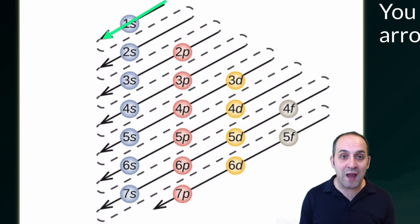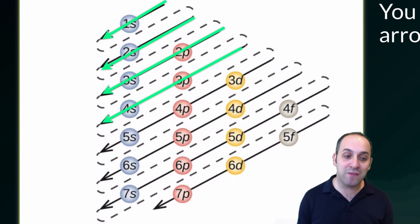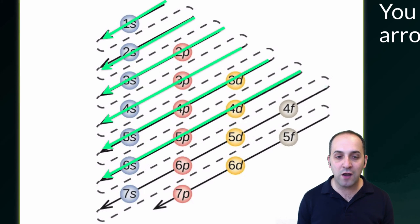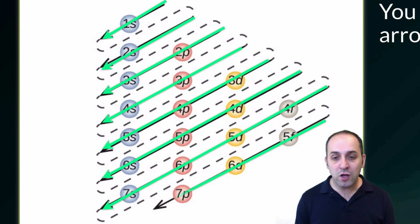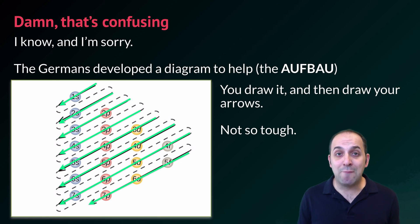So first you're going to start with 1s, and then you're going to do 2s, and then 2p, and then 3s, and then 3p, and then 4s, and 3d, and 4p, and 5s, and so on, and so forth. You could of course just memorize this too, but I think it's a waste of time. Hopefully that makes this not so tough. If you have any questions about this, now would be a great time to write them down before we move on.